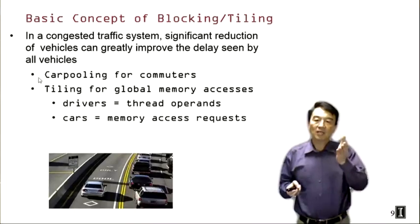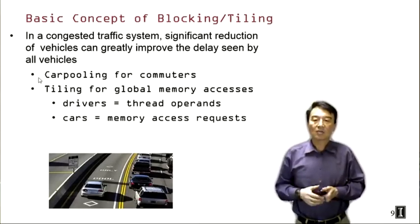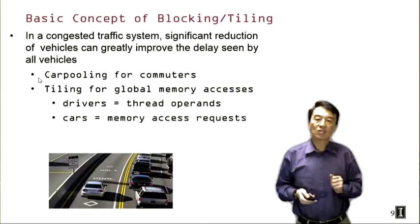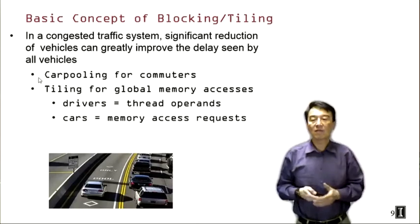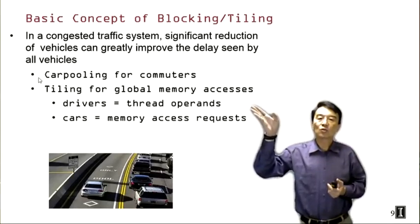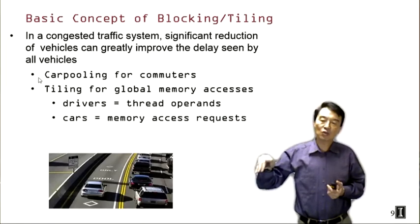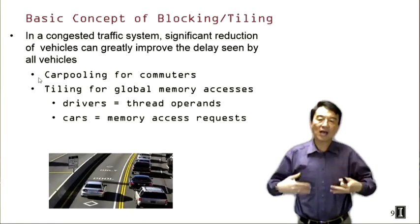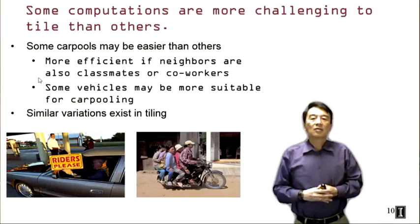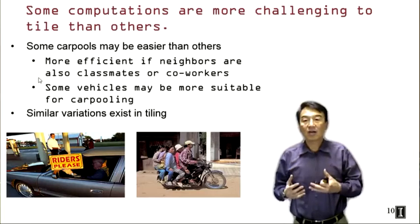The memory access requests need to move in and out of the memory system, just as cars move through roadways. What we're really doing is having all the operands carpool and utilize the same memory requests — we move values into shared memory and all arithmetic units access operands from shared memory, essentially riding in the same carpool.